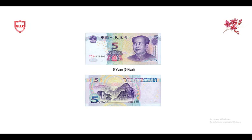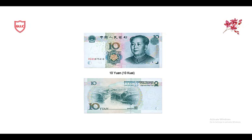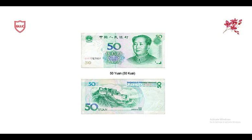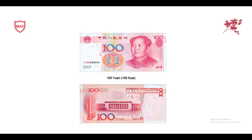Yi Yuan is equal to one Yuan. Next is the five Yuan currency note, also called 'wu kuai' in Chinese — 'wu' means five and 'kuai' is the informal word for currency. Next is ten Yuan, also called 'shi kuai' in Chinese. Then there is 20 Yuan, or '20 kuai' — 'er shi kuai.' Next is 50 Yuan, or 'wu shi kuai' in Chinese. The biggest note is 100 Yuan, called 'yi bai kuai' in Chinese.